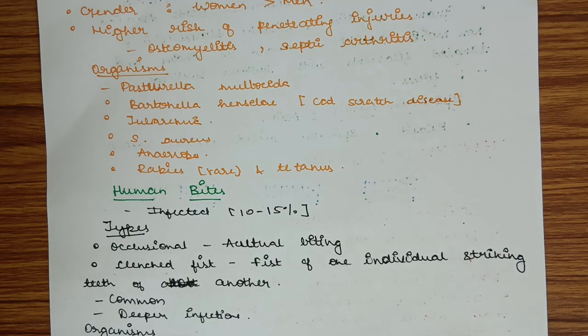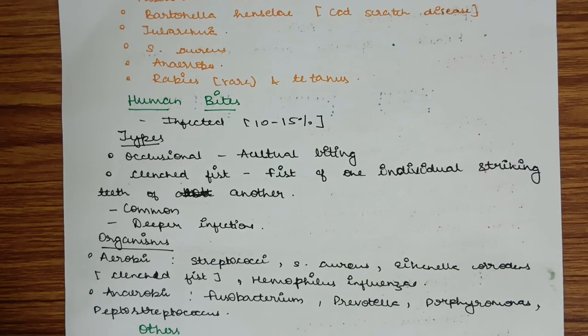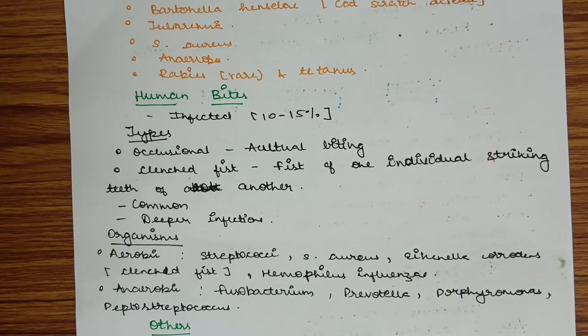Human bites are infected only in 10 to 15% of cases. Types include occlusional and clenched fist bites. Occlusional bites refer to actual biting by another human. Clenched fist bites occur when fist of one individual strikes teeth of another, resembling a bite. Clenched fist bite is more common and causes deeper infections.